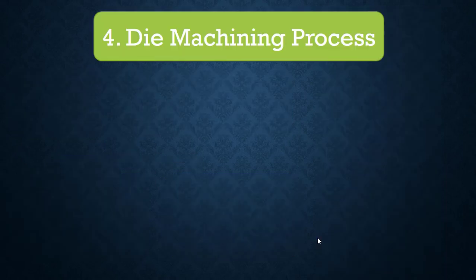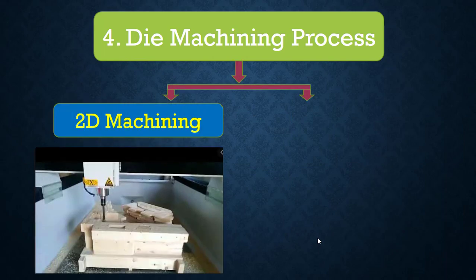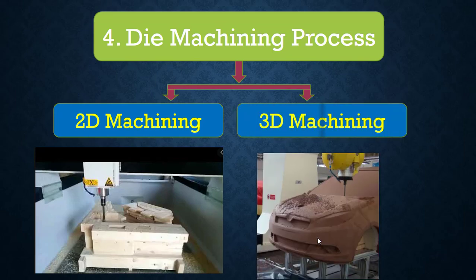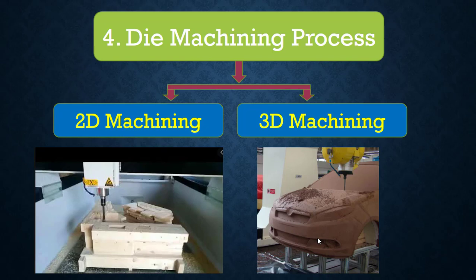Moving to the process stage, which is the die machining process. I have categorized it into two machining processes. One is 2D machining, consisting of conventional machining processes like plate sizing, casting machining, drilling, chamfering, etc. And 3D machining, which is a special machining process with the help of CAM software programming in CNC machines.